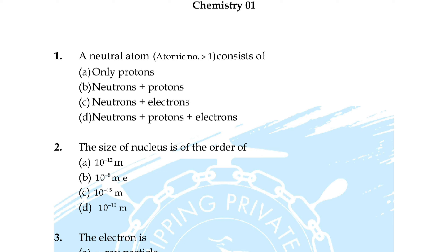Seventh question: identify the correct order of the size of the following. Correct answer is option C. Question number eight: the lanthanide contraction is responsible for the fact that — option A: Zr and Y have about the same radius, B: Zr and Nb have similar oxidation state, C: Zr and Hf have about the same radius, option D: Zr and Zn have the same oxidation state.